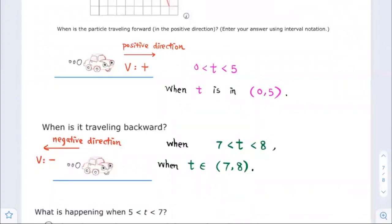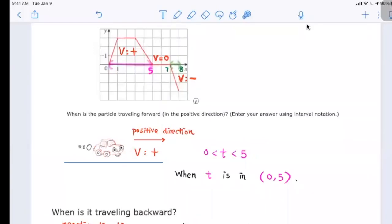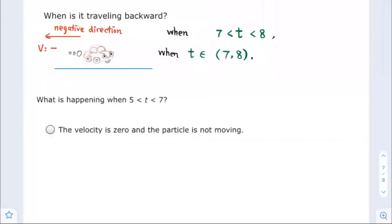Now what's happening when t is greater than 5 and less than 7? We see that the velocity is equal to 0 when t is greater than 5 and less than 7. Therefore, the velocity is zero and the particle is not moving.